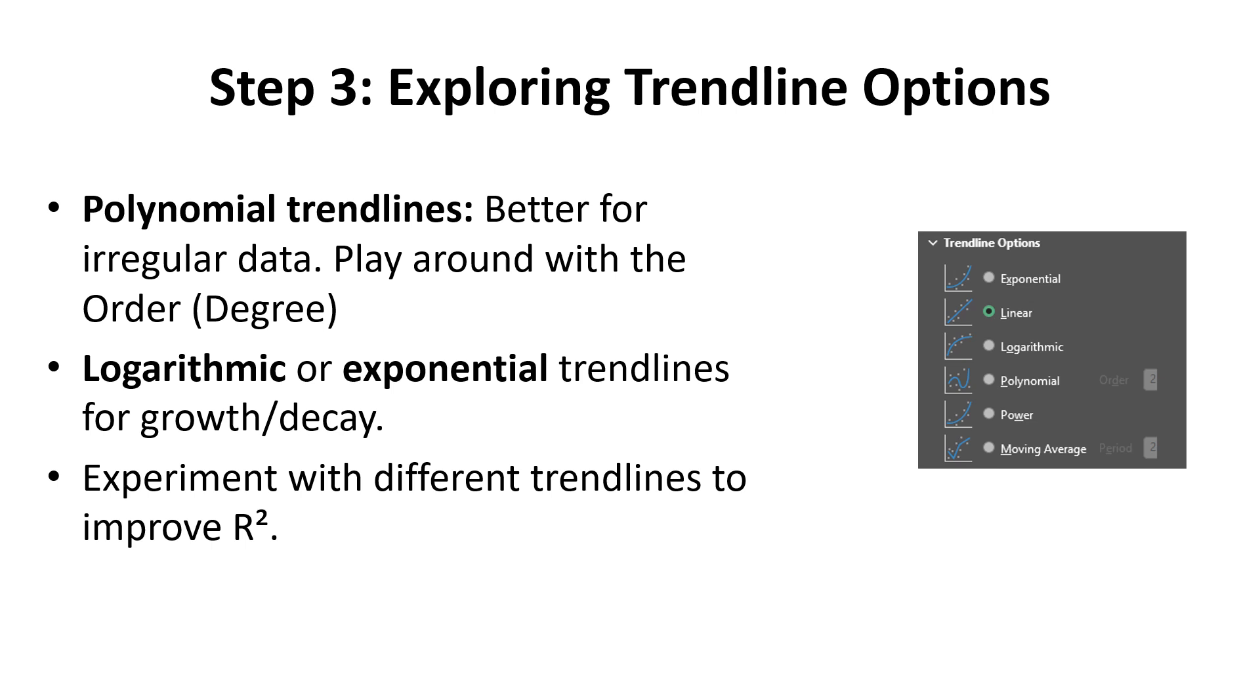Some of the trendline options we have: exponential, linear, logarithmic, polynomial - be aware that polynomial can be given in different orders. That order is what we might call the degree in math, so the highest power. Polynomial of order two is quadratic, polynomial of order three will be cubic, and we have a power. We're not going to use that moving average.